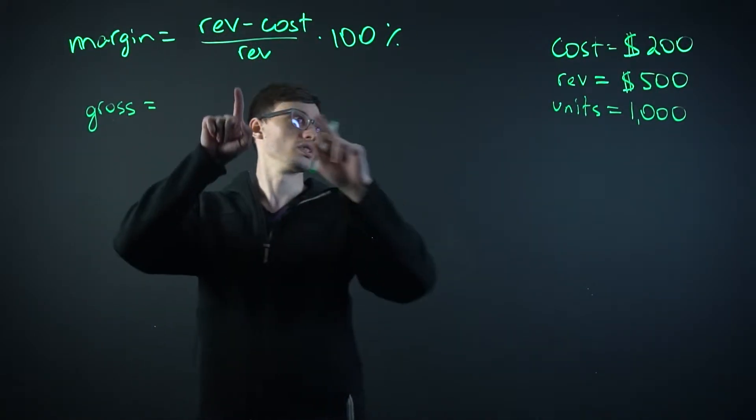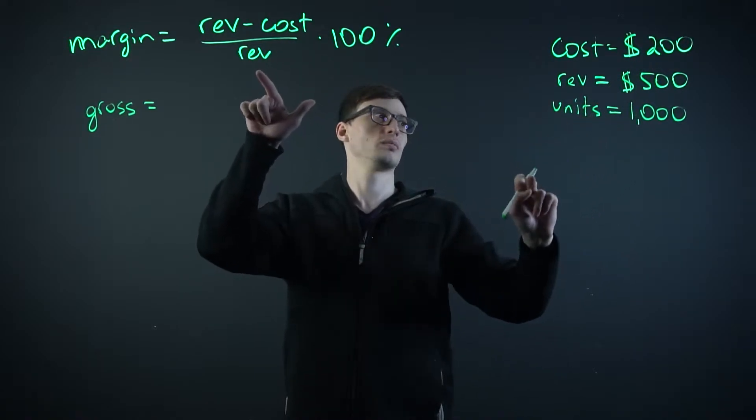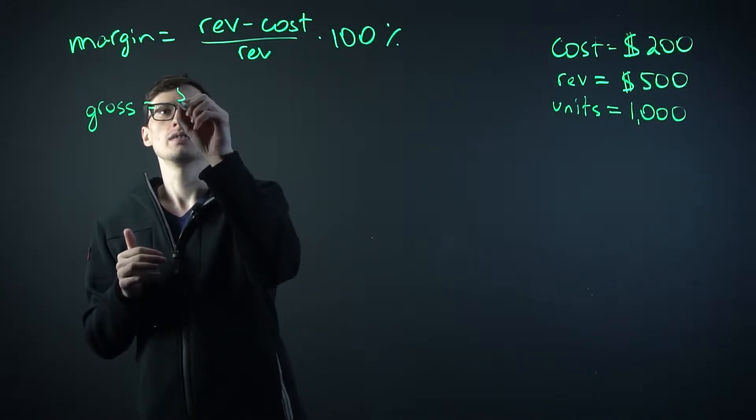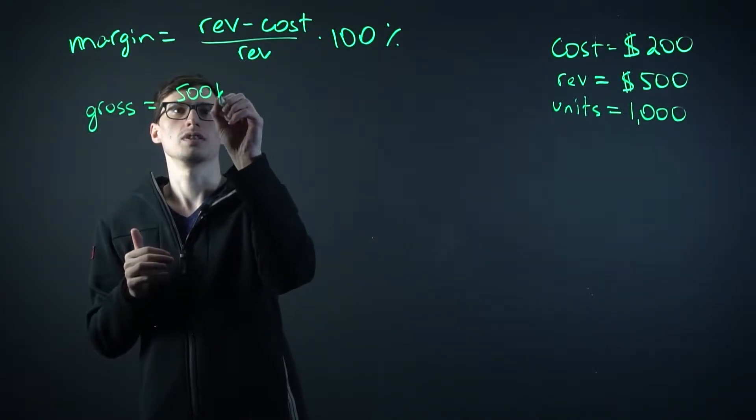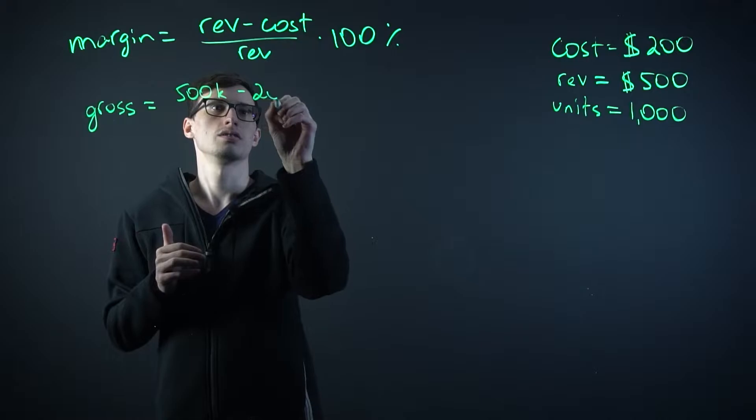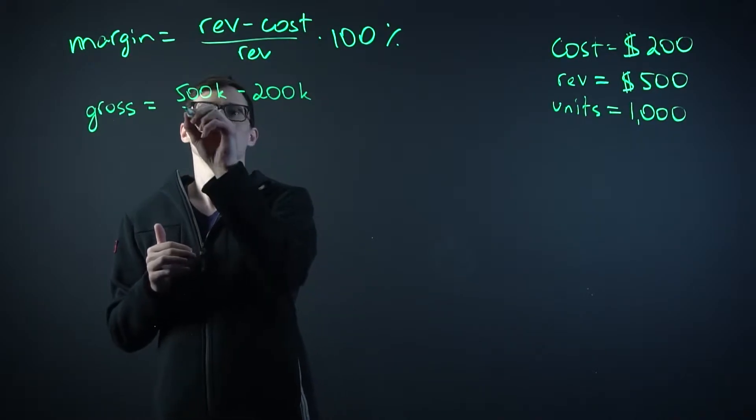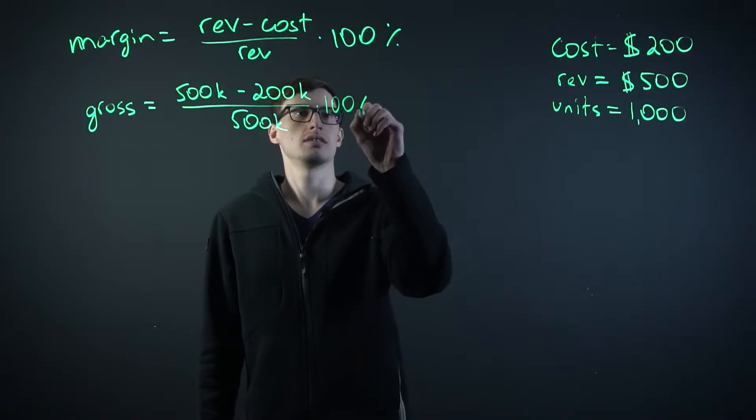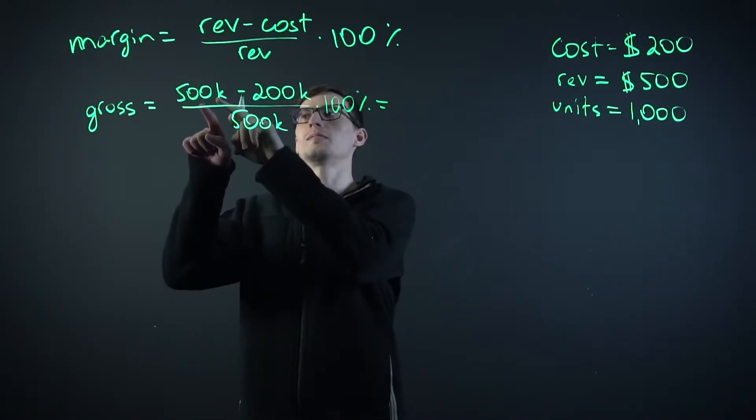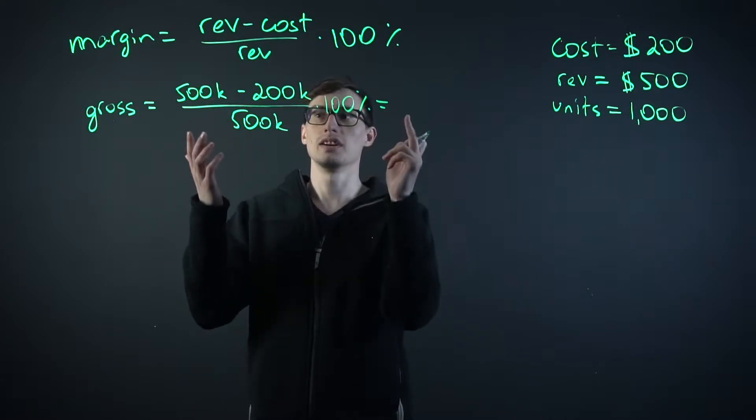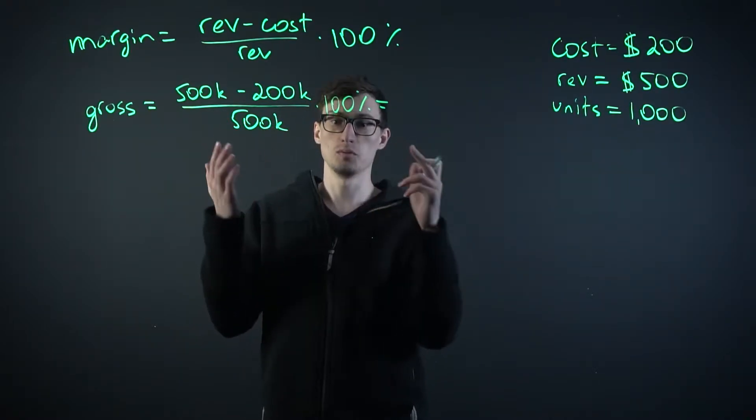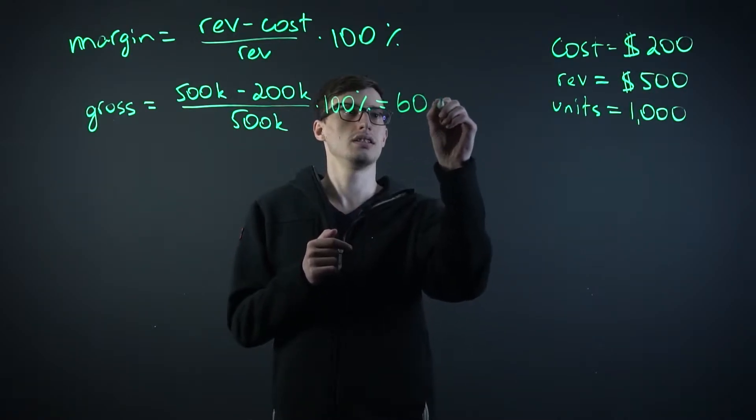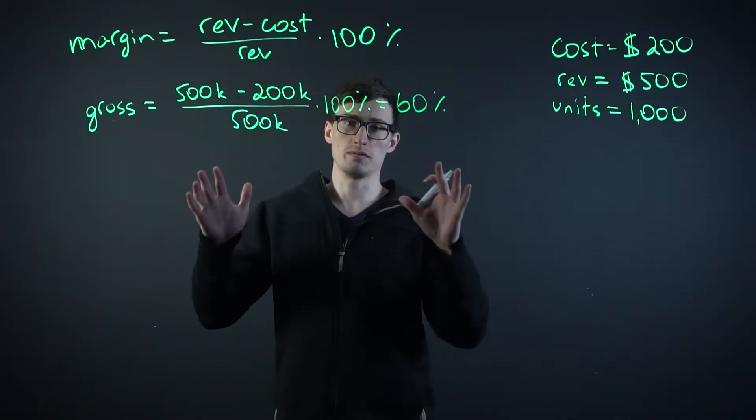By this formula, it'll be $500 minus $200 divided by $500, but we're selling 1,000. So it'll be $500,000 minus $200,000 divided by our revenue, $500,000 times 100%.